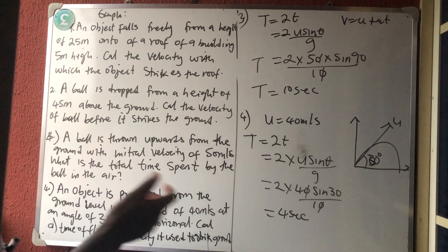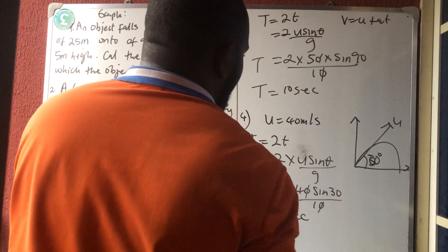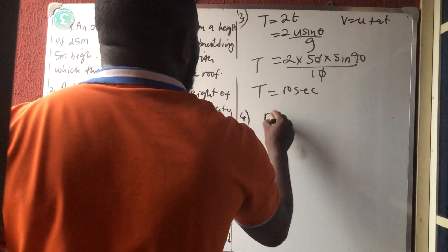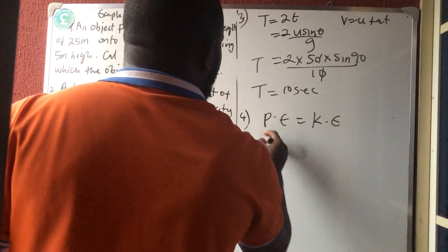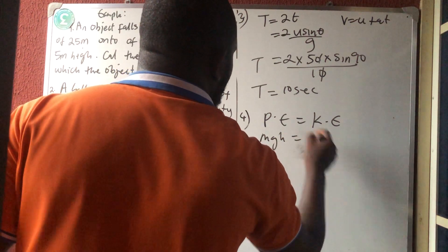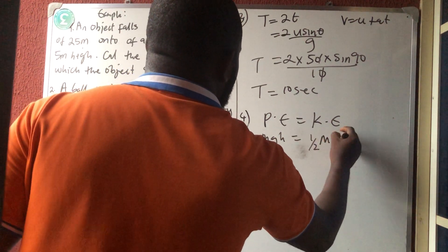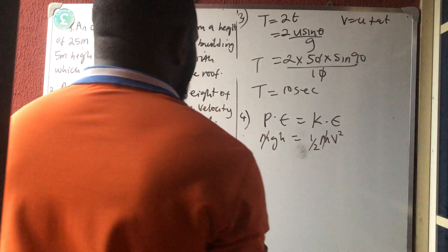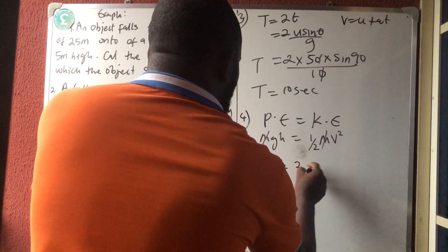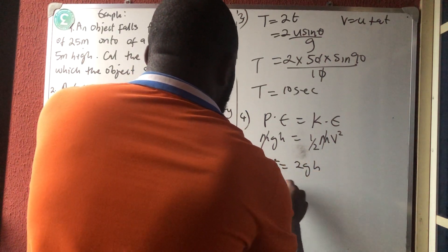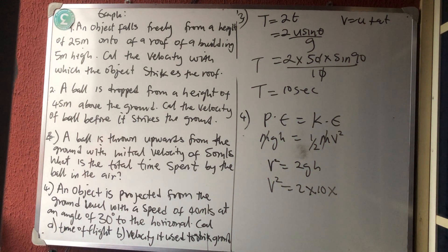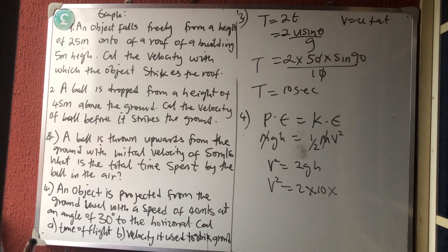The next thing they ask is the velocity used to strike the ground. We can use energy. But for that, we need the height, and we have not calculated the height yet. So let's calculate the maximum height first.